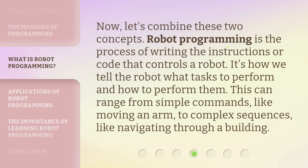Now let's combine these two concepts. Robot programming is the process of writing the instructions or code that controls a robot. It's how we tell the robot what tasks to perform and how to perform them. This can range from simple commands, like moving an arm, to complex sequences, like navigating through a building.